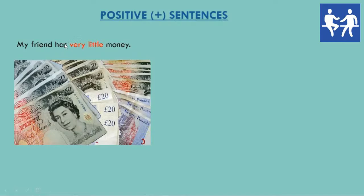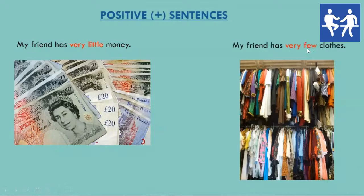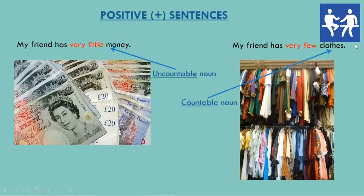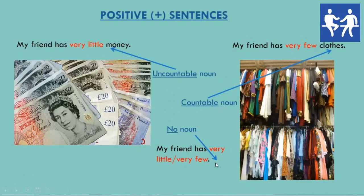We can also say: my friend has very little money, or my friend has very few clothes. Again, with an uncountable noun, the quantifier that we use is 'very little.' And with a countable noun, the quantifier that we use is 'very few.' And when we have no noun, we use 'very little' or 'very few,' depending on whether we are talking about a noun that is countable or uncountable.